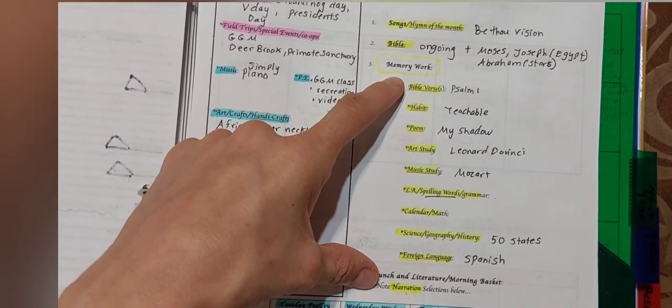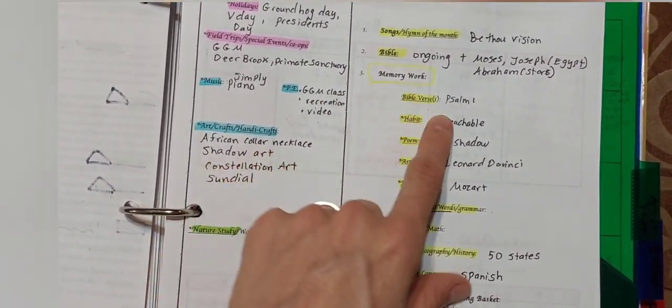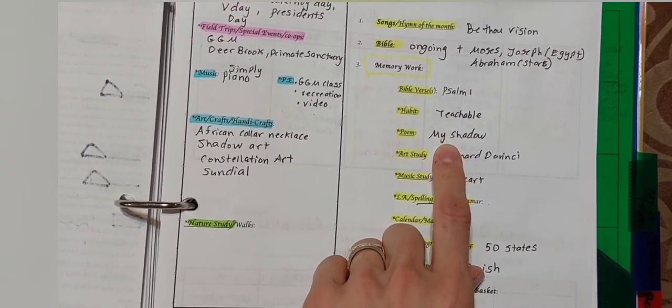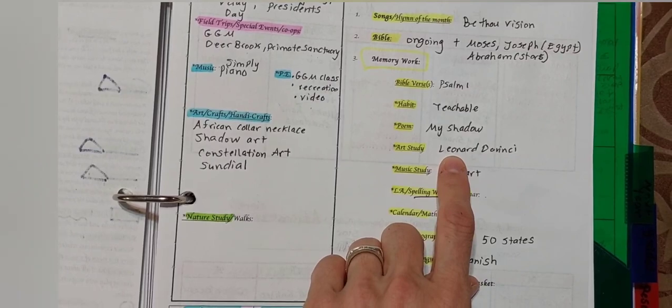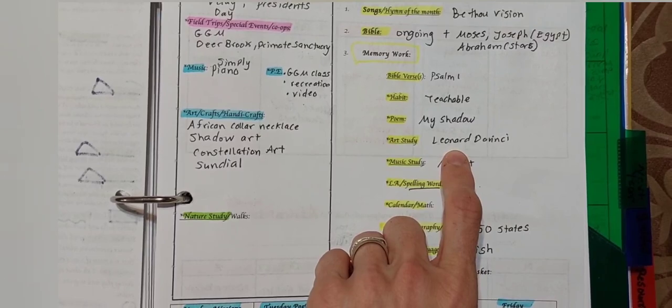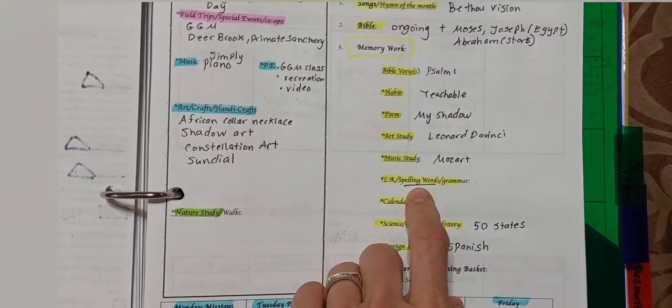And then for our memory work components, Charlotte Mason components that are on our focus board, our Bible memory is Psalms 1, our habit is teachable, our poem is My Shadow, our art study artist is Leonardo da Vinci, and we could switch out a different art piece of his each week or one for the whole month. We'll see how that goes. For music study, it's Mozart.